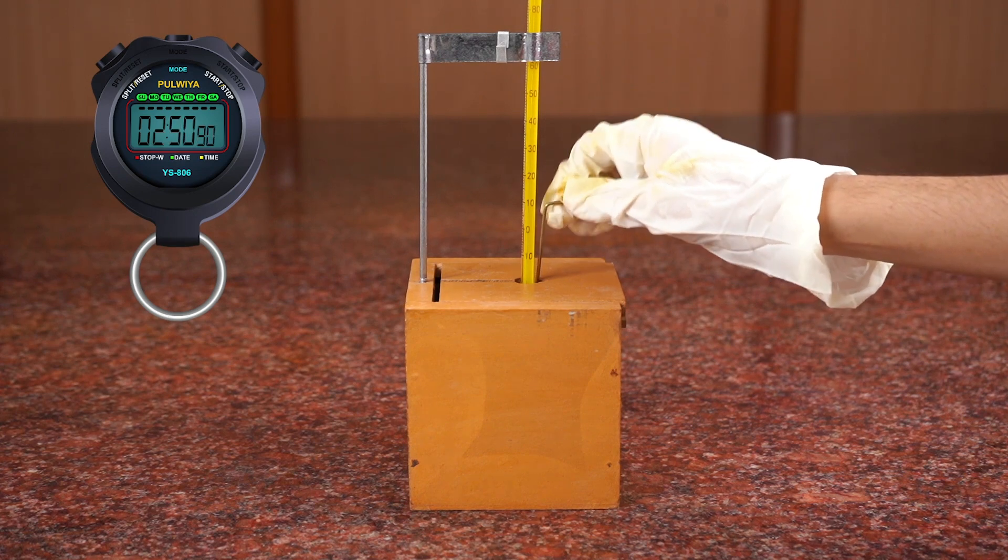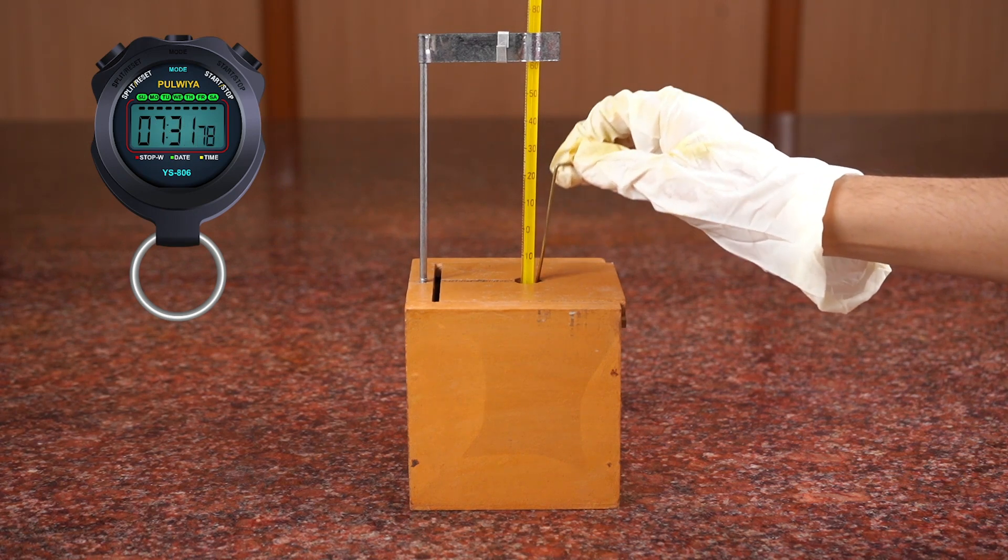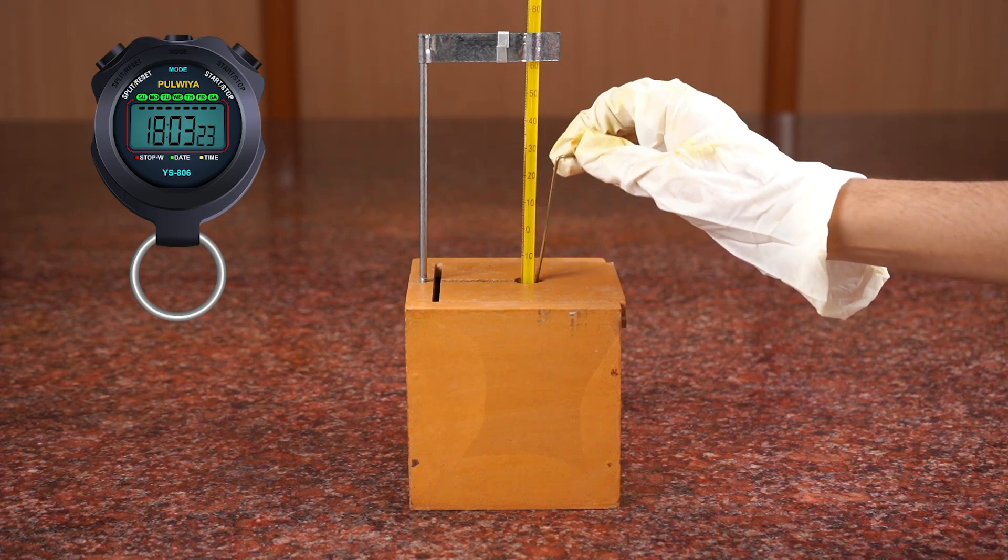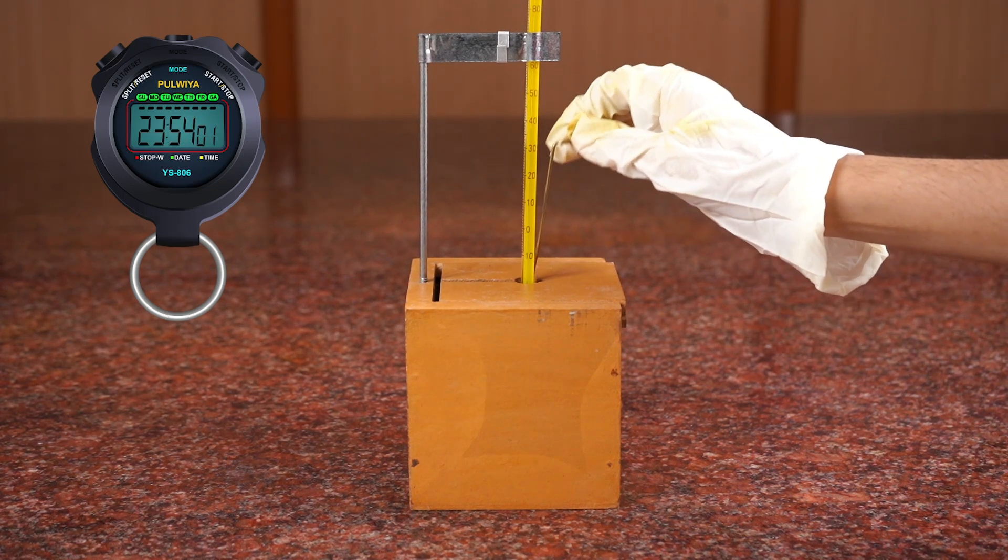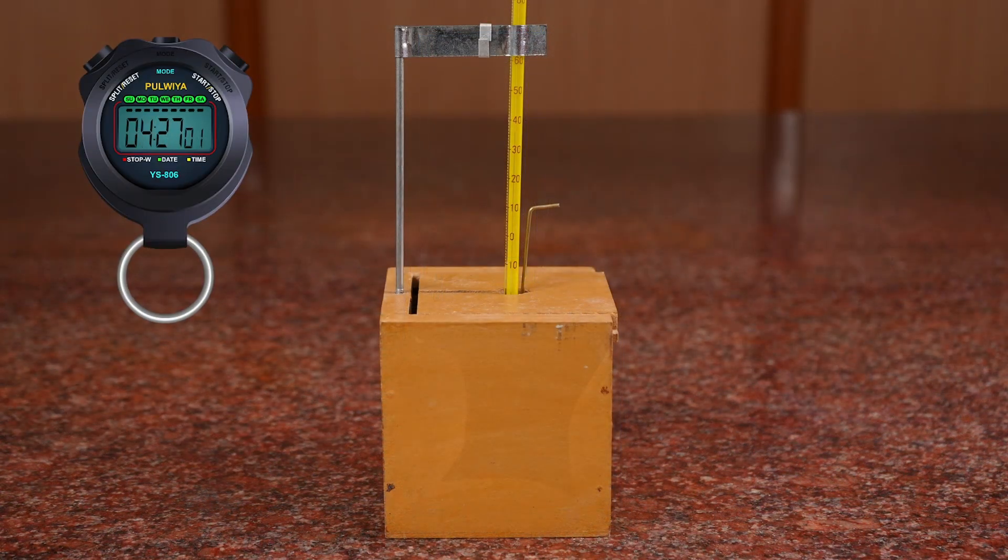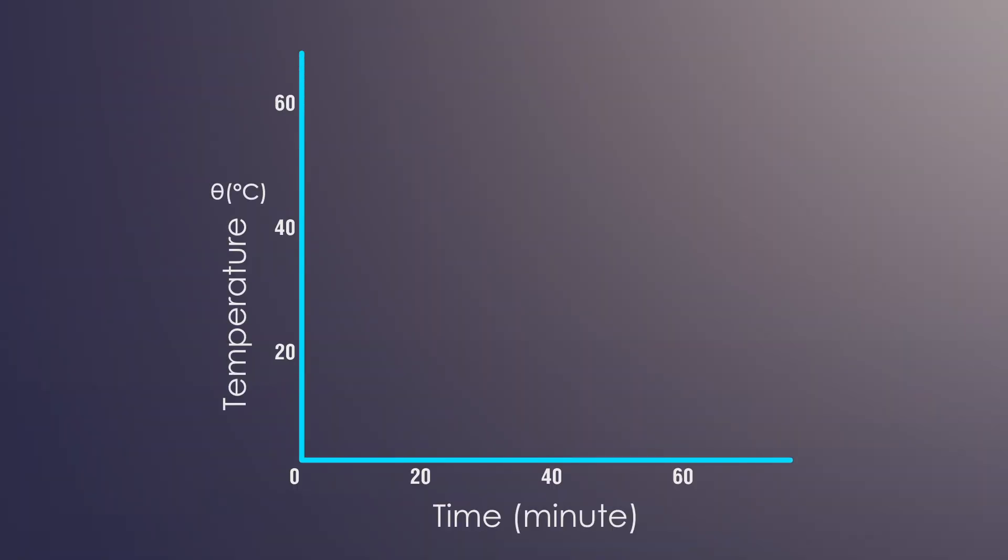Switch on the stopwatch. Note down thermometer reading each minute until it reaches 10 degrees Celsius above room temperature. Note down thermometer reading each two minutes until it reaches 5 degrees Celsius above room temperature. Draw a graph between time on x-axis and temperature of water on y-axis.